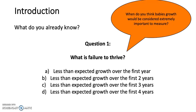When do you think baby's growth would be considered extremely important to measure? The answer is c) less than expected growth over the first three years. Normally failure to thrive is measured within the first three years, but it can be diagnosed earlier.